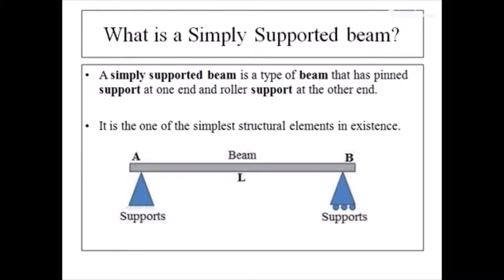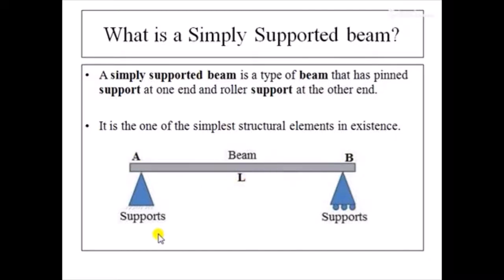Since our practical is going to be based on a simply supported beam, let us see what it is. A simply supported beam is a beam that has a pinned support at one end and a roller support at the other end. In the diagram, you can see there is a beam AD with length L supported by two supports — a pinned support (also called hinge support) and a roller support. It is one of the simplest structural elements in existence.